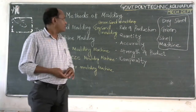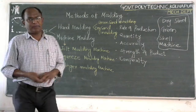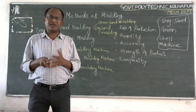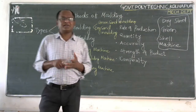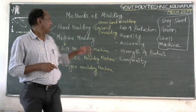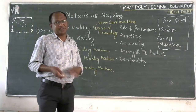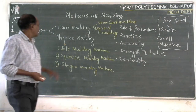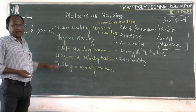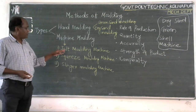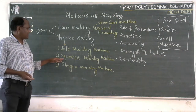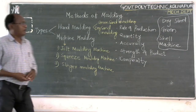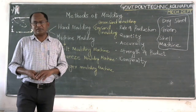So basically there are two types of molding methods: first one is hand molding, another is machine molding. These are the points of differentiation between the two. Machine molding is again classified into three types: jolt molding machine, squeeze molding machine, and slinger molding machine. We are going to discuss these one by one in the coming sessions. Thank you.